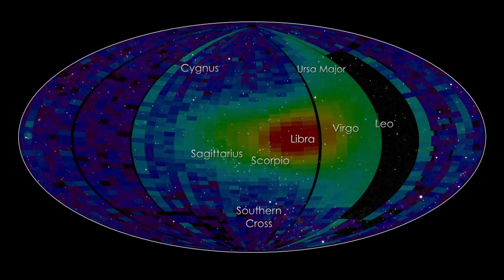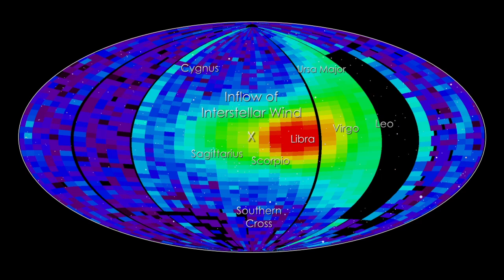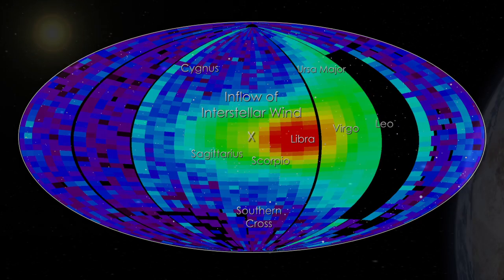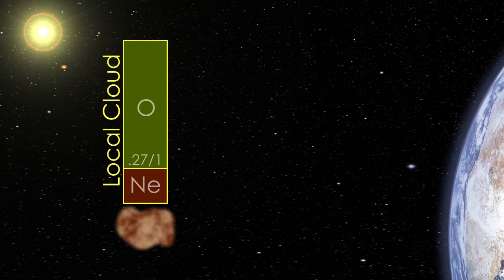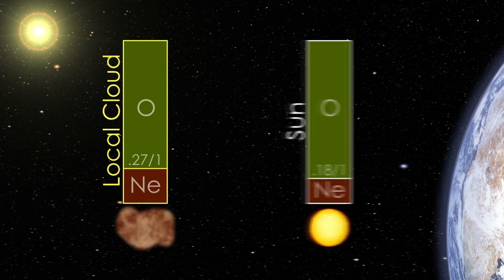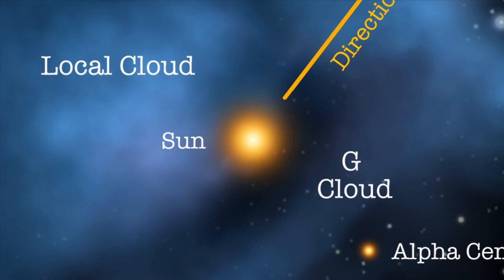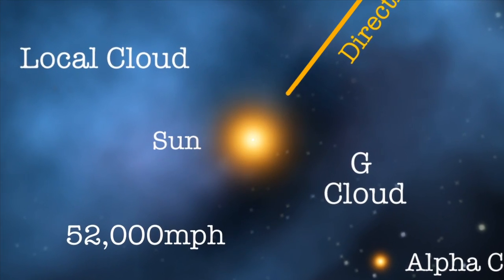IBEX has also measured ENAs from the interstellar wind, giving scientists a clearer picture of its composition. Surprisingly, it turns out that the local interstellar material is different from the sun, and the wind is slower and coming from a different direction than previously thought.